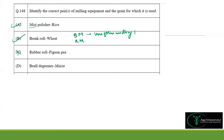Option D: we use a degermer to degerm the maize, and we use this degermer to degerm the maize. Therefore for this MSQ question, A, B, and D are the right answers.